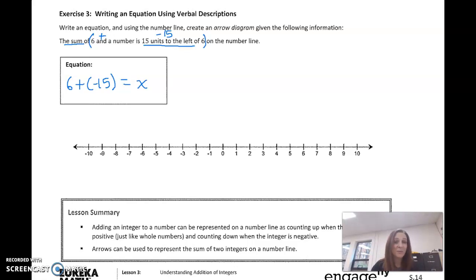So on our number line, using our arrow diagrams or our vectors, I'm going to start at zero, and I'm going to go to six. All right, now from there, I am going to take a negative 15 here. That means I'm moving 15 units, but I'm going to go to the left because it's negative.